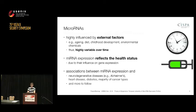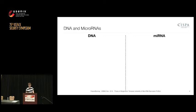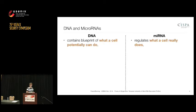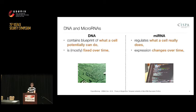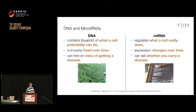Let's have a look at a comparison between DNA and microRNAs. While DNA contains mostly the blueprint of the body, every cell in the human body contains the same DNA, so it just tells the cell what it potentially can do. The microRNAs tell the cell what it really does and regulate gene expression. In a computer analogy, DNA is the hardware of the body whereas the microRNAs are the software. While DNA is fixed over time except for rare mutations, the microRNAs change quite a lot due to external factors. DNA can predict the risk of getting certain diseases sometimes, but microRNA actually reflects the health status and can tell whether you carry a specific disease at a given point in time.